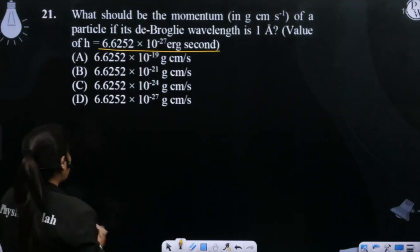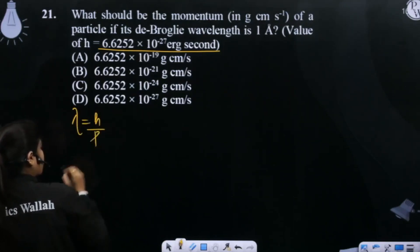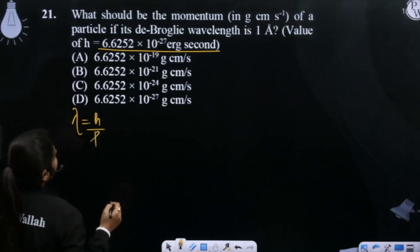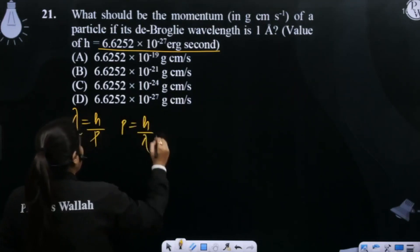If we calculate the momentum, we have given the de Broglie wavelength. So a simple relation is lambda equals h upon p. Right? So momentum is given, so this will be equal to h upon lambda.